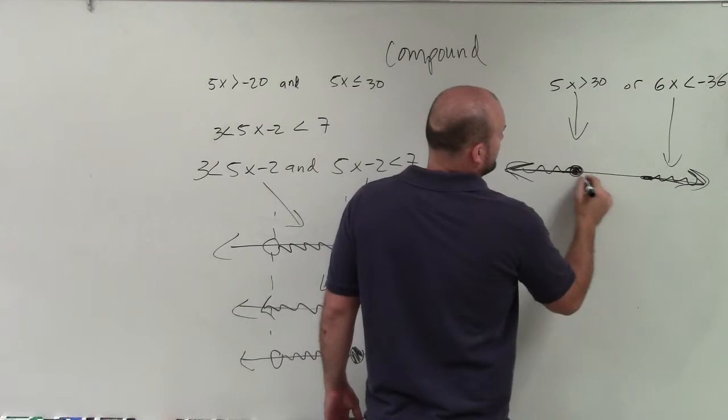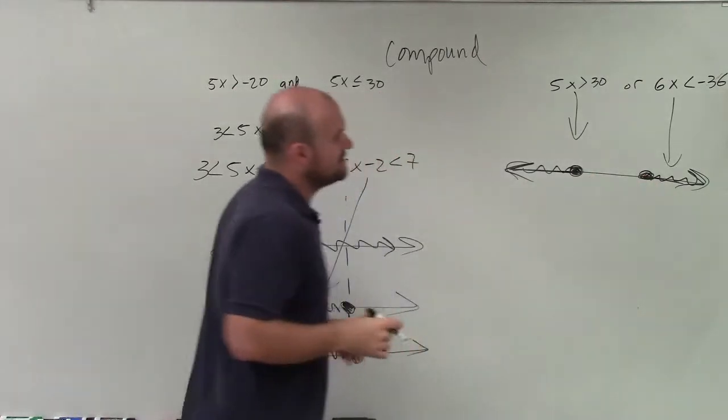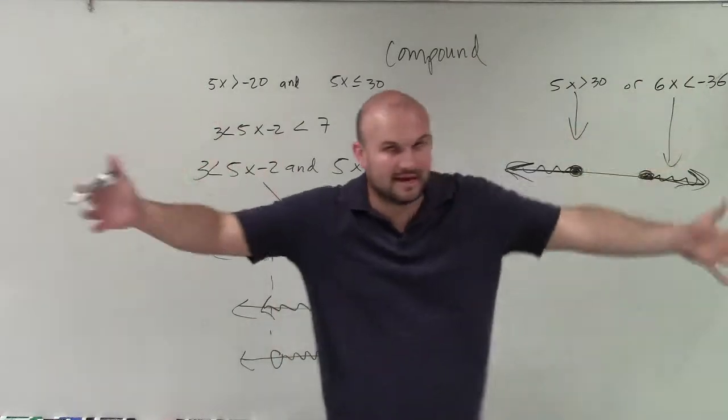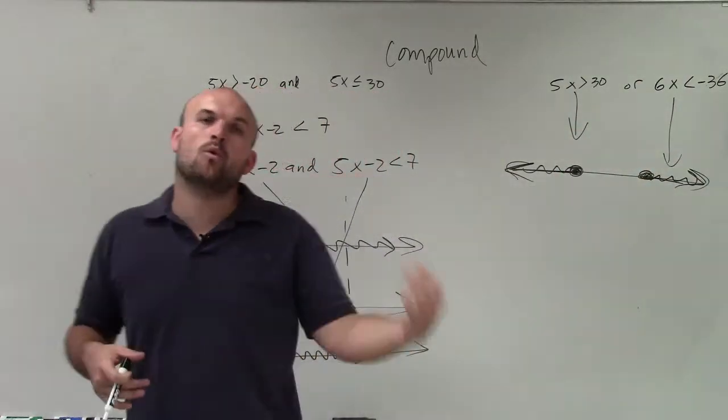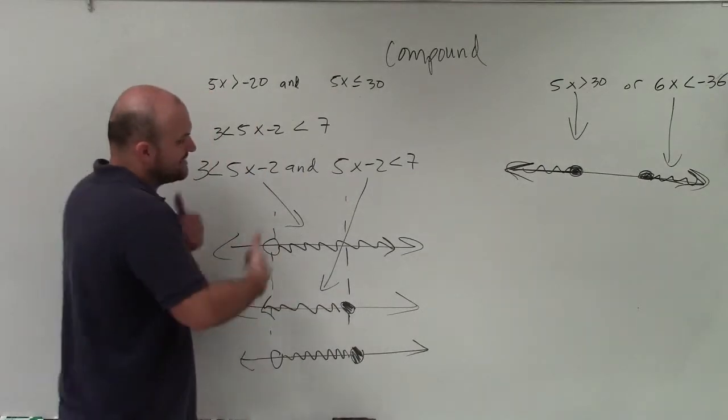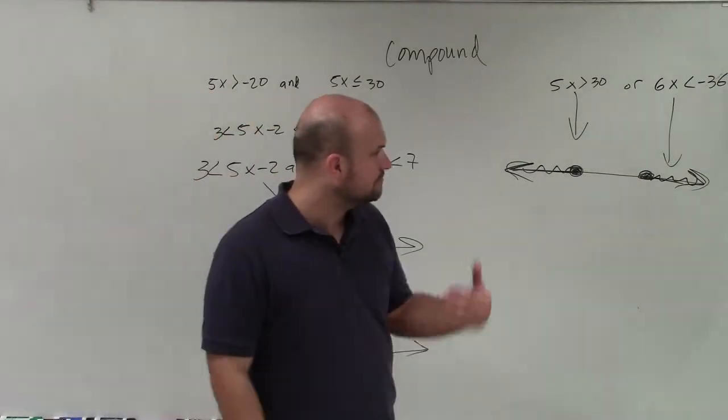So therefore, these inequalities, if I choose a number and it's true for that one, then it works. And if you choose that one, then it works. So it only needs to be true for one of the inequalities. So we graph them still both. But basically, think of and as the intersection.